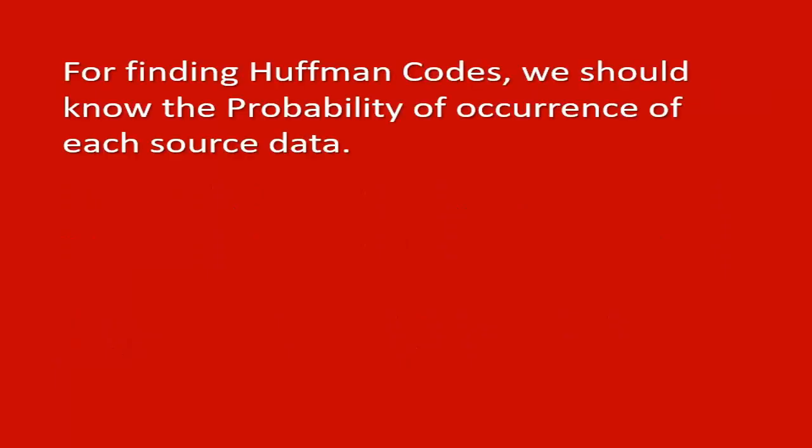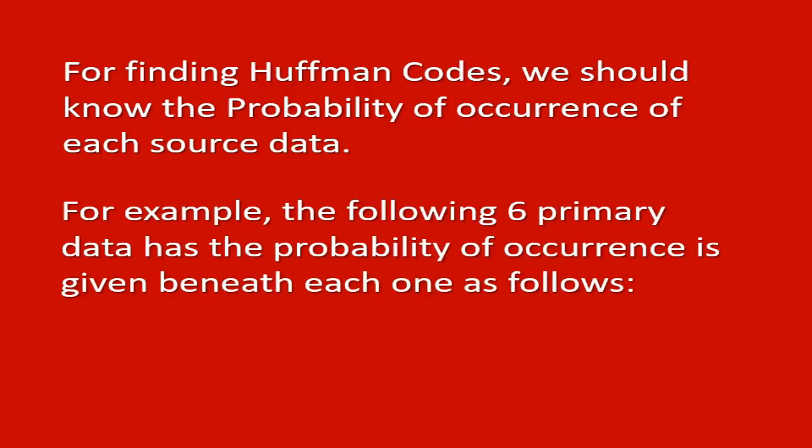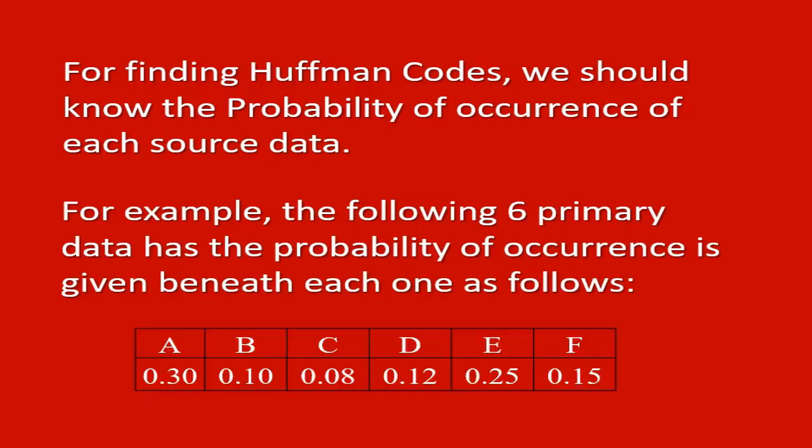For finding Huffman codes, we should know the probability of occurrence of each source data. For example, the following six primary data has the probability of occurrence given beneath each one. If you add all probabilities, it will be equal to 1.